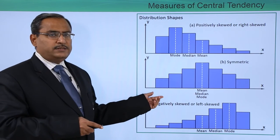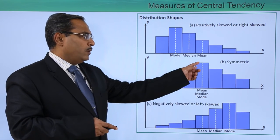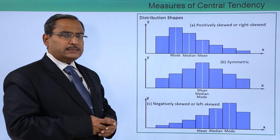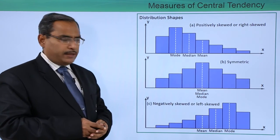Now we will be going for the next distribution shape, that is symmetric. In that case, the middle class is having the maximum frequency, so the mode will be existing here along with median and mean.